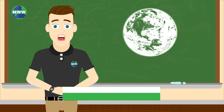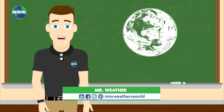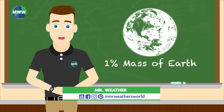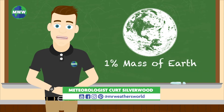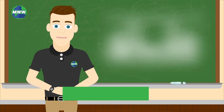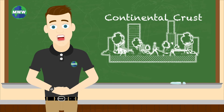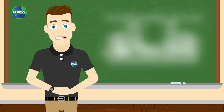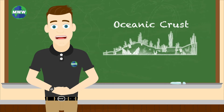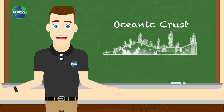Earth's outermost layer is called the crust. It makes up only 1% of the planet's mass. Humans live on the continental crust, and below the sea is the oceanic crust.